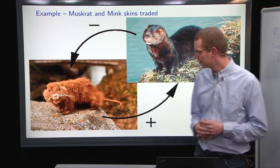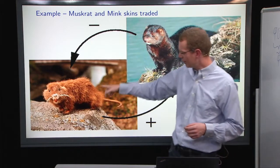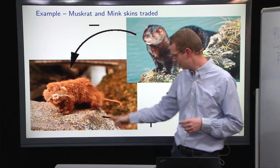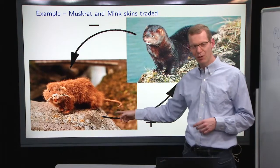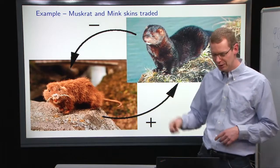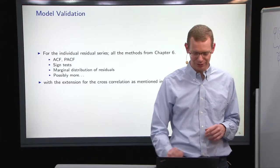Basically, what happens is that mink predators eat the muskrats, so whenever there are more mink, you have less muskrats, but when you have more muskrats, you will also get more mink. So you have a feedback loop here, and the question is, can we estimate that as a linear time series model?